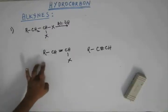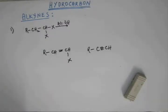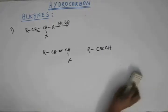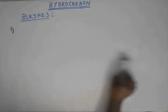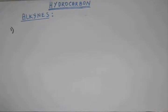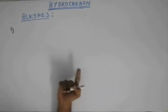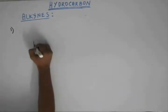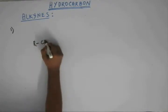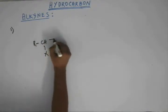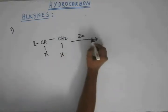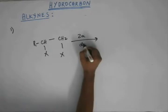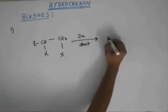So gem dihalide or vicinal dihalide — both are going to give us the same alkyne. Extending this series: do you remember the reaction I taught when we covered alkenes? When zinc dust is added to a vicinal dihalide, this gives us an alkene.